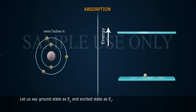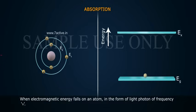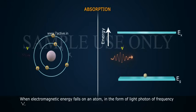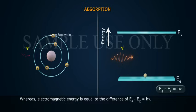Let us say ground state as EG and excited state as EX. When electromagnetic energy falls on an atom in the form of light photon of frequency nu, whereas electromagnetic energy is equal to the difference of EG minus EX is equal to H nu.